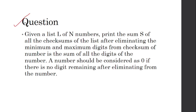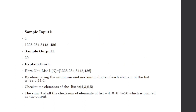This is the question: given a list L of N numbers, print the sum S of all the checksums of the list after eliminating the minimum and maximum digits. The checksum of a number is the sum of all the digits of the number. A number should be considered as zero if there is no digit remaining after eliminating. Let's see the example first — this is your array size and these are the elements present in your array.